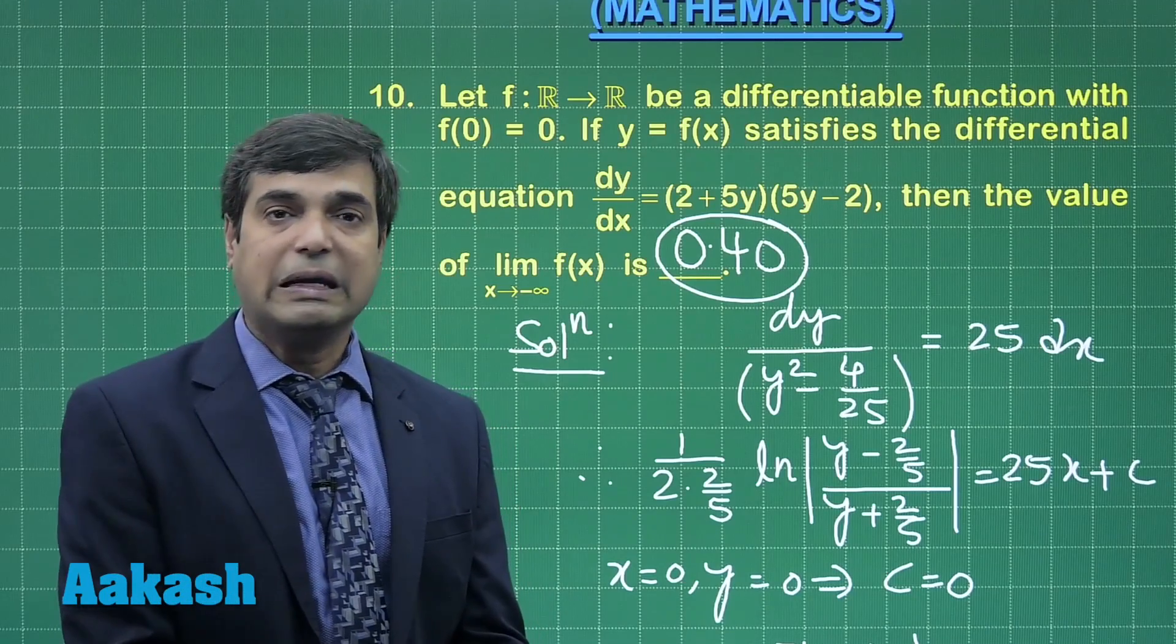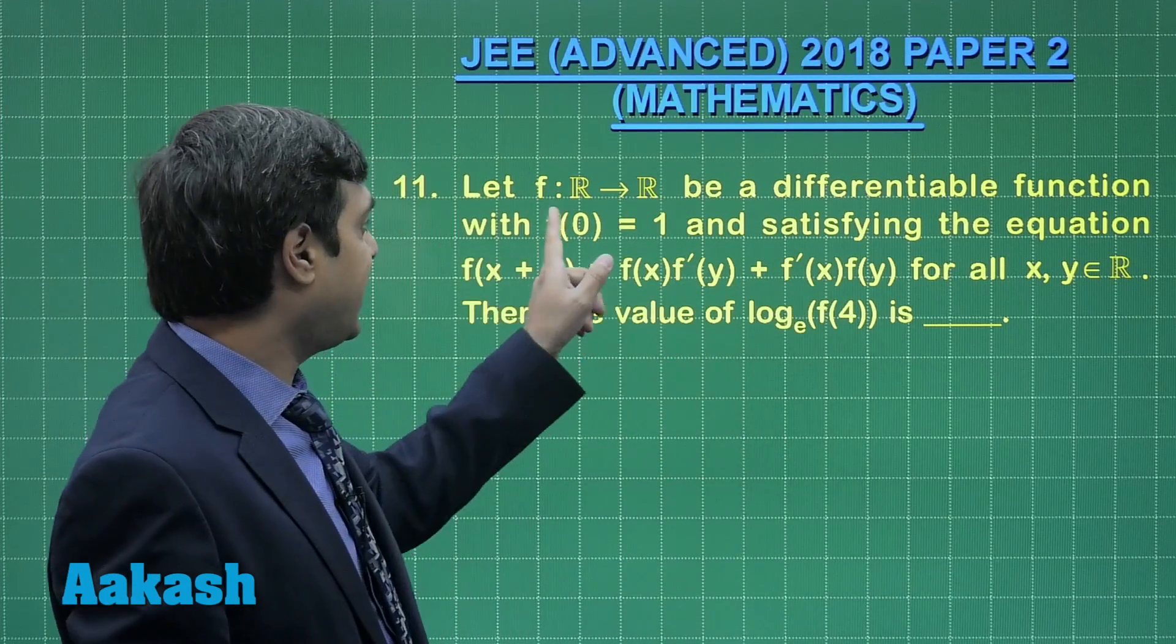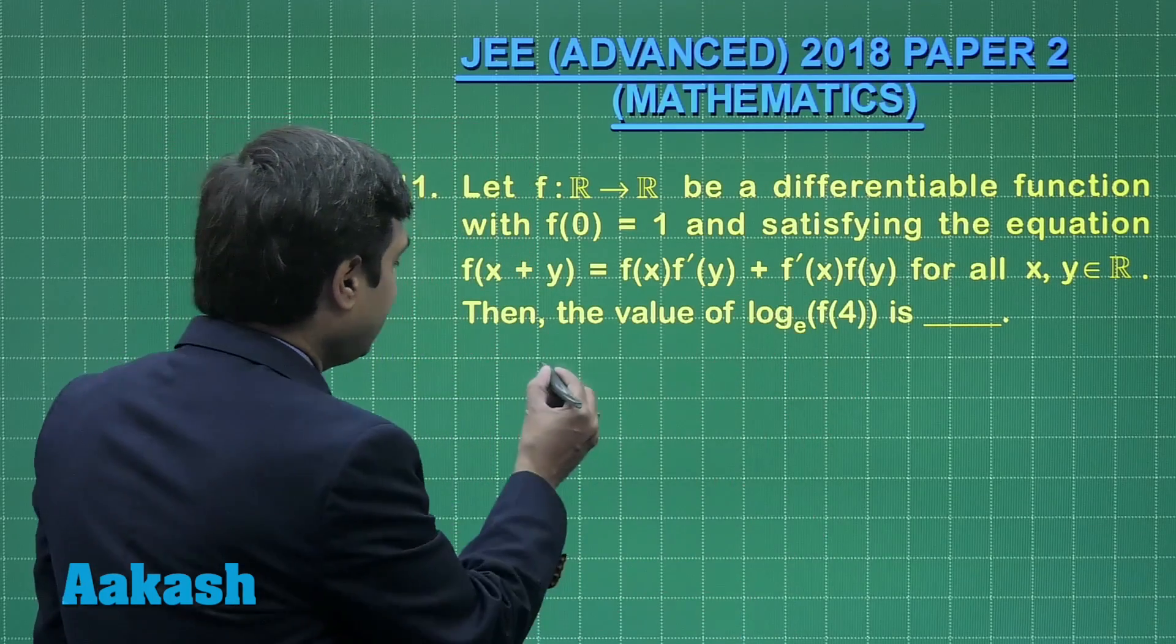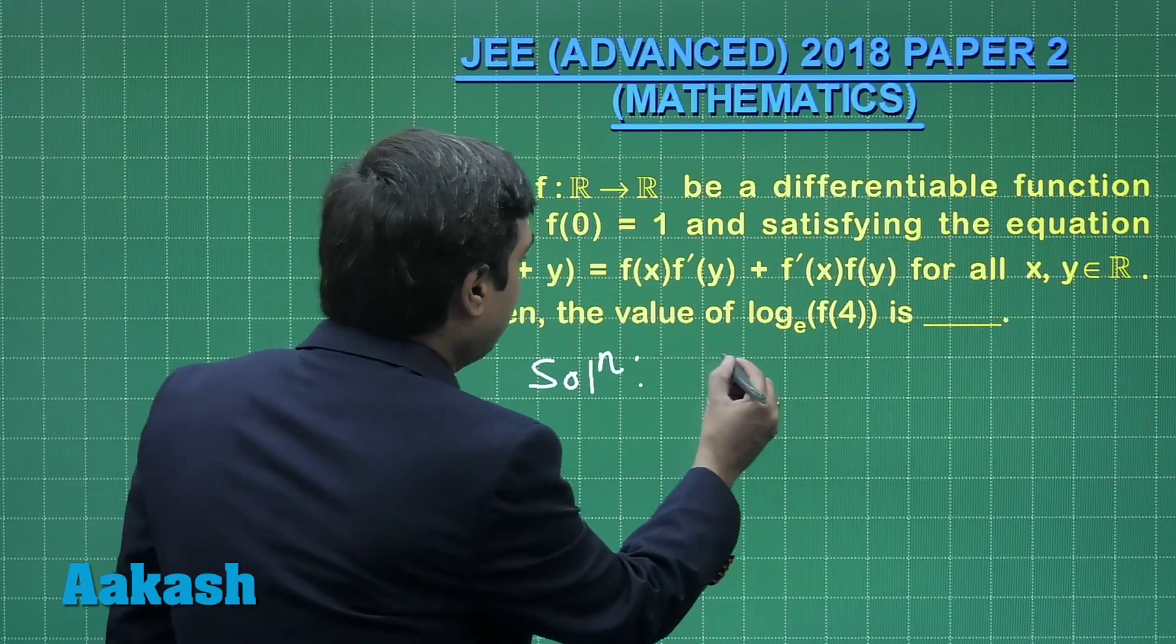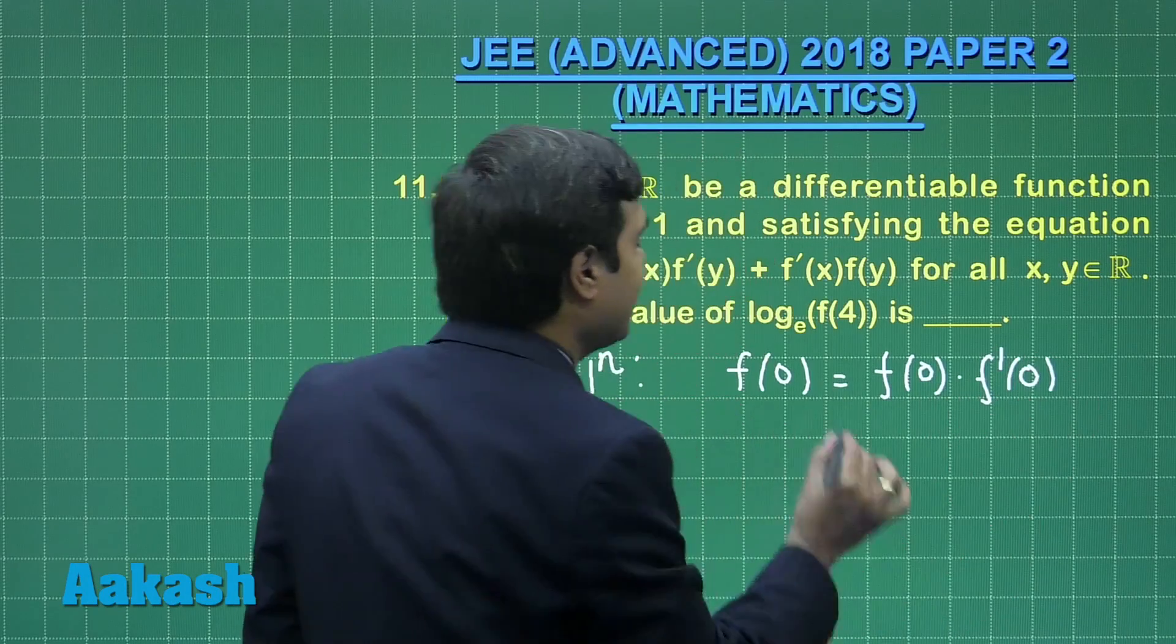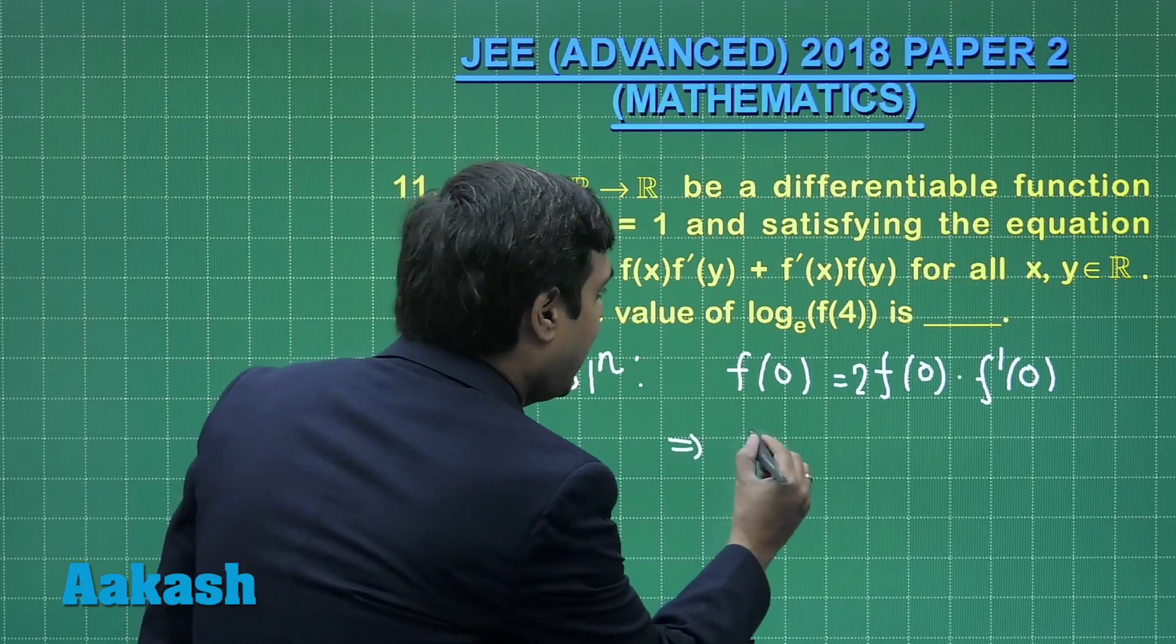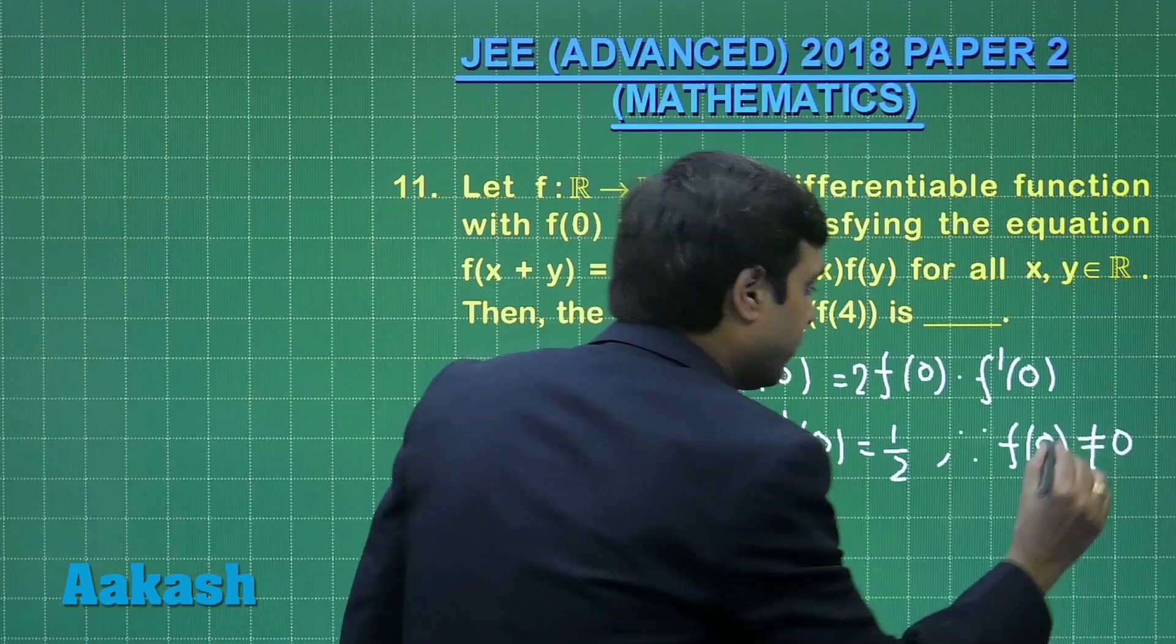Moving to question number 11, let f be a differentiable function such that f(0) is 1 and it is satisfying one given constraint for all real values of x and y. We have to find the value for log f(4) to the base e. Let us put x and y equals 0. We are getting f(0) equals f(0) into f'(0) plus f'(0) into f(0), that is twice. Since f(0) is 1 and not 0, we have f'(0) equals 1/2.